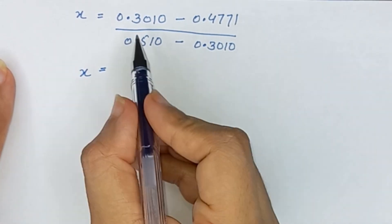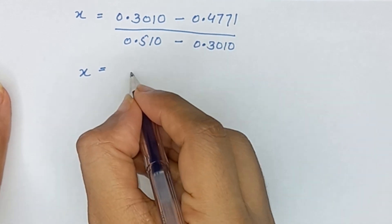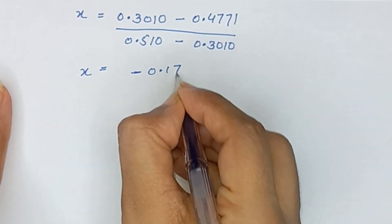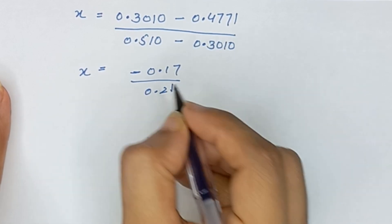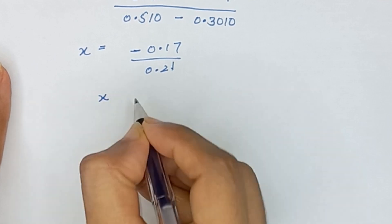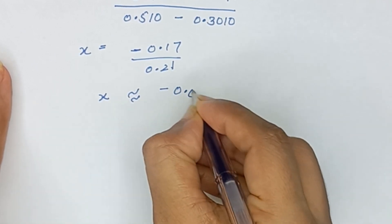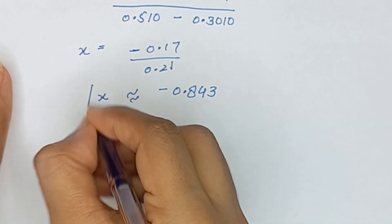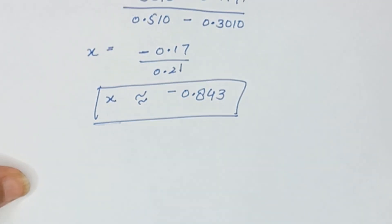So x equals 0.3010 minus 0.4771, which is minus 0.1761, divided by 0.21. The approximate value of x is equal to minus 0.843. Thanks for watching. I hope you like this video — if you do, don't forget to subscribe to my channel. Bye-bye.